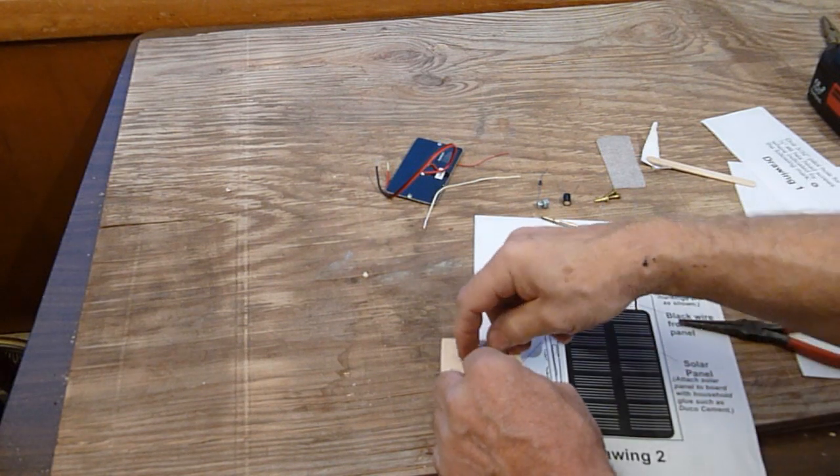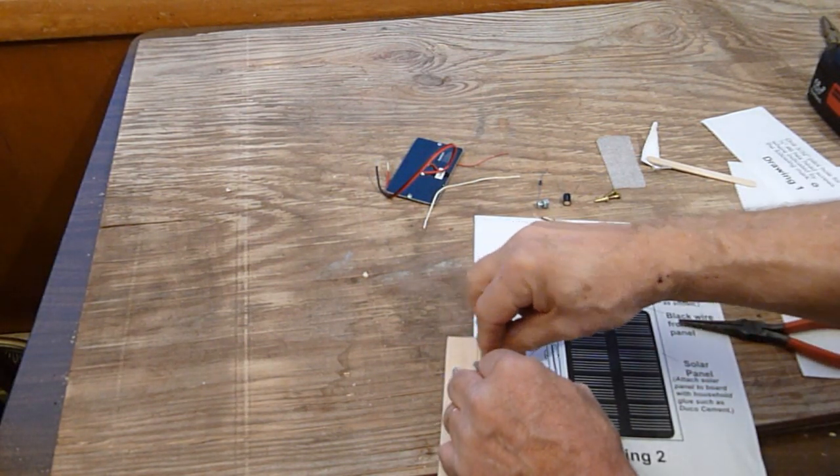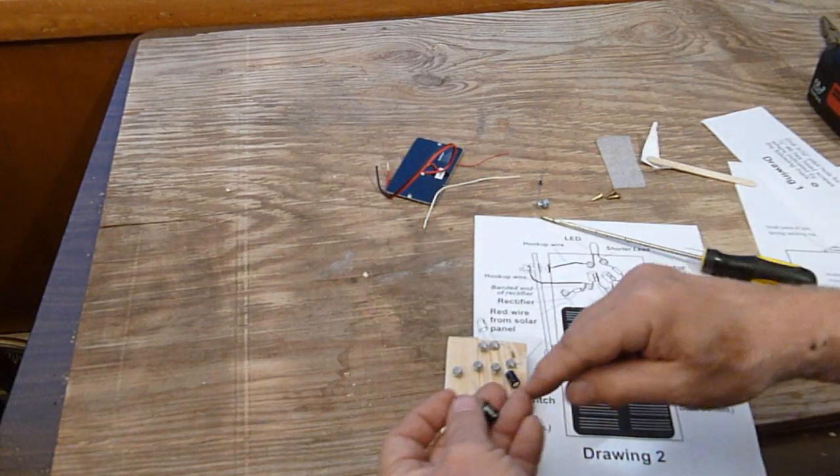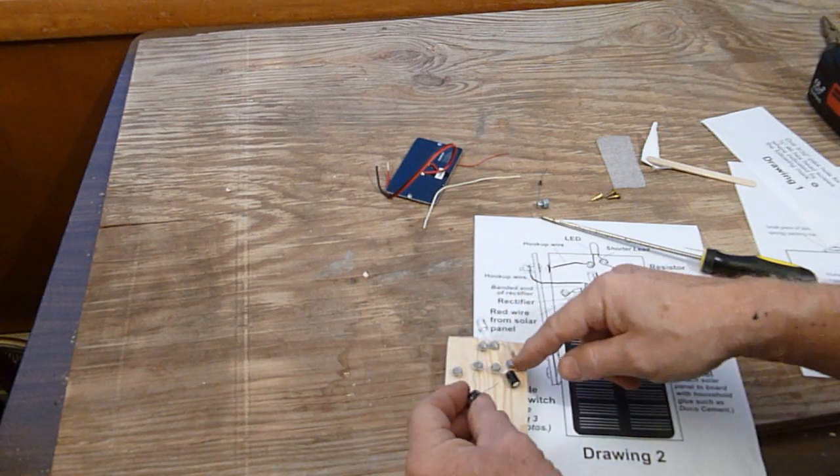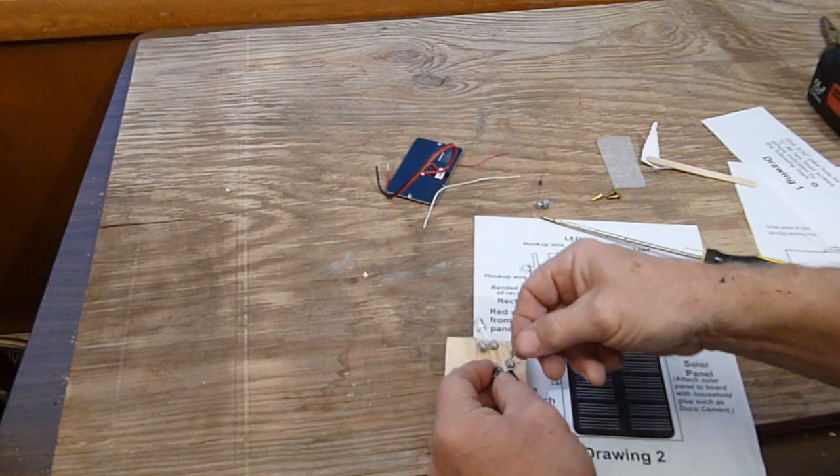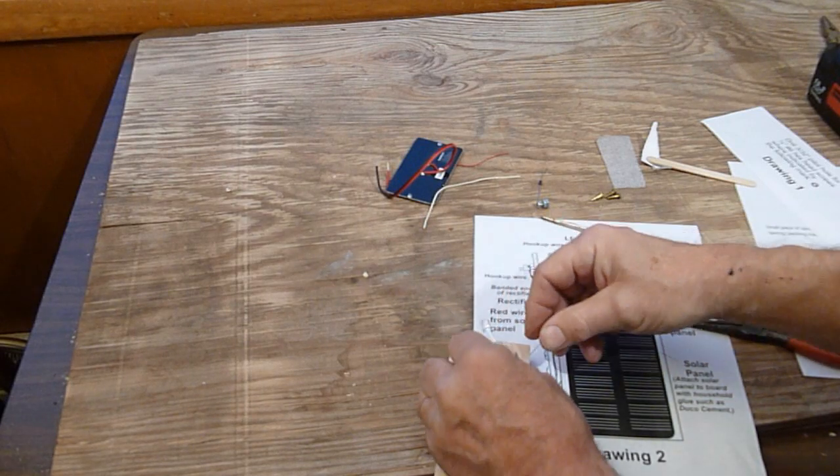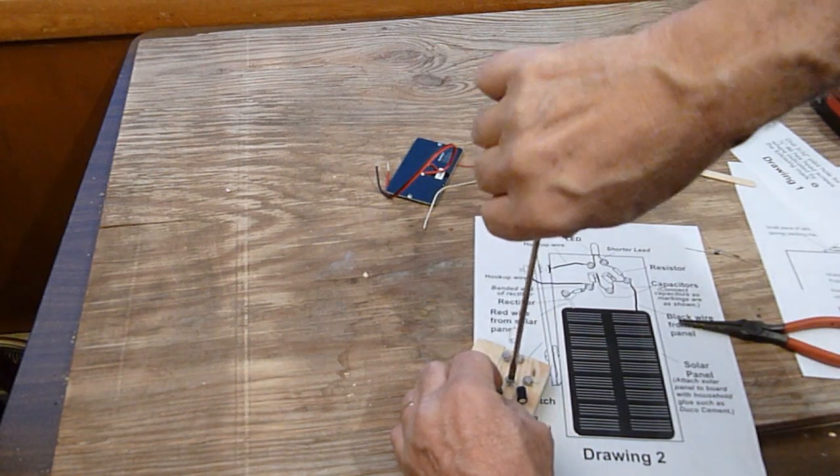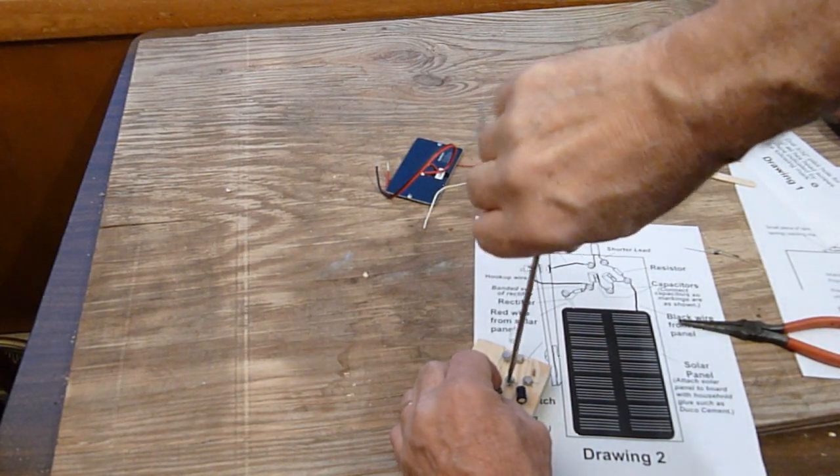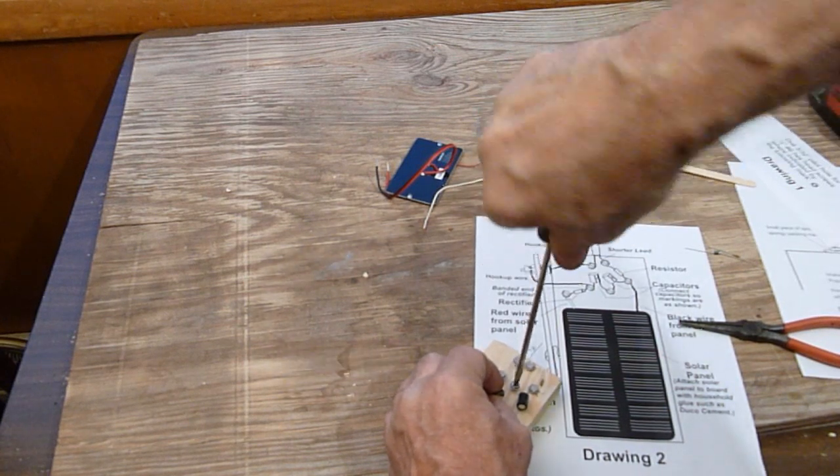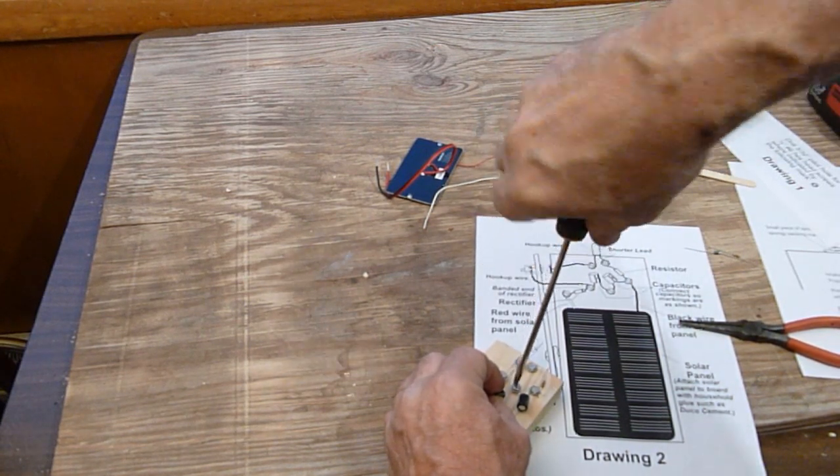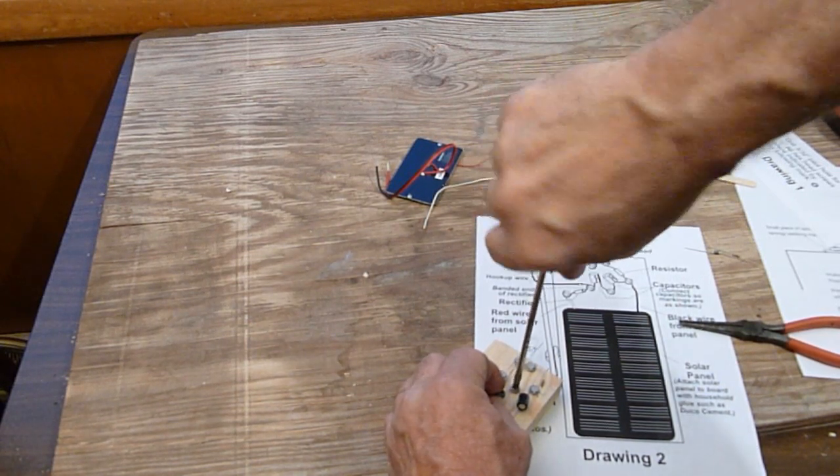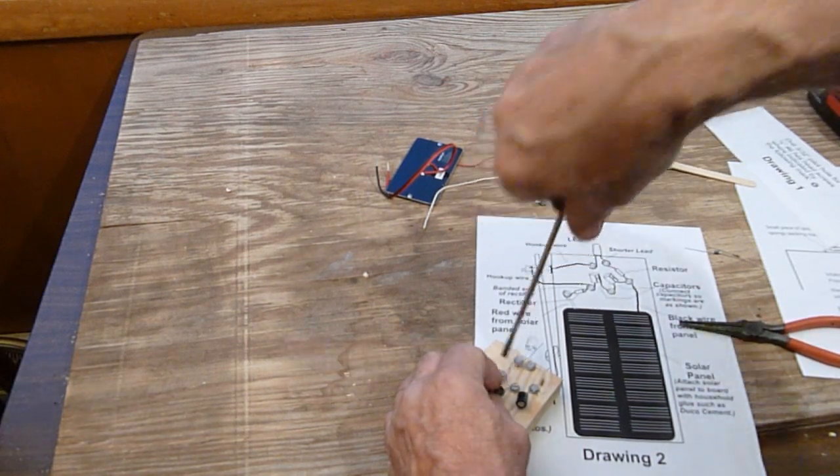The next connection, we connect it to this screw. But before we tighten it, we want to connect the other capacitor. Again, this capacitor, this minus side will be on this one. And we put it around here and then we hold it and tighten it.